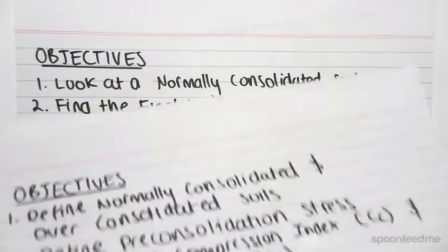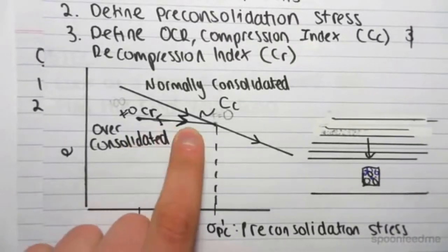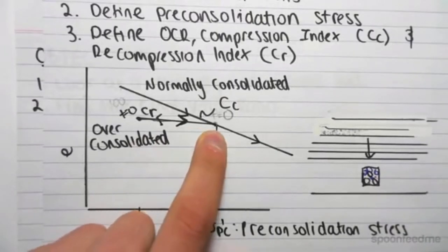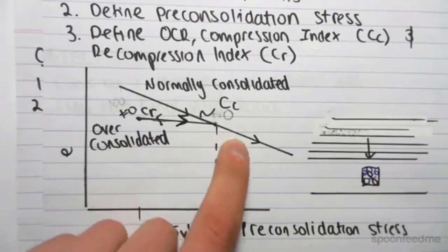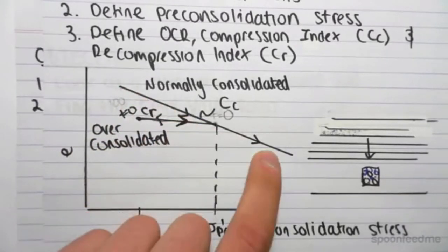So back to our diagram we had in the first video. In the previous video, we looked at what happened along this line. Now we're going to be looking at what happens when we are along this line here, not up here on the normally consolidated line, but down here.